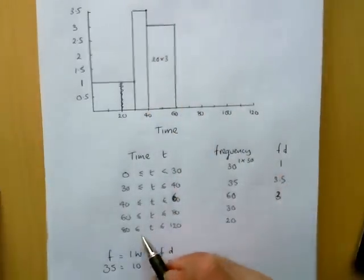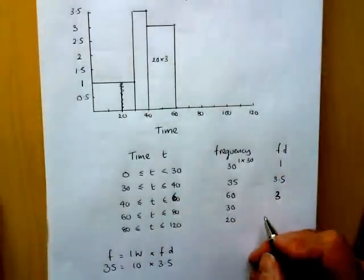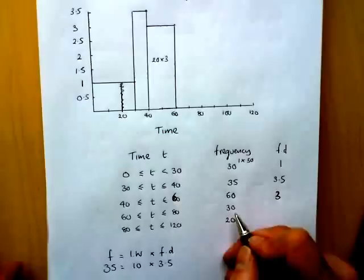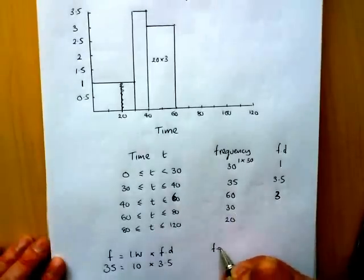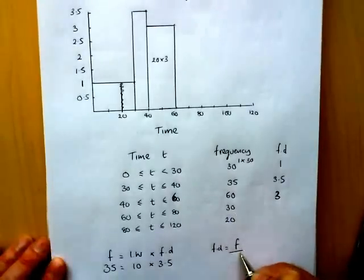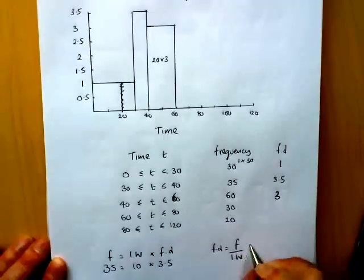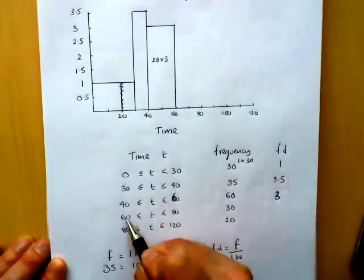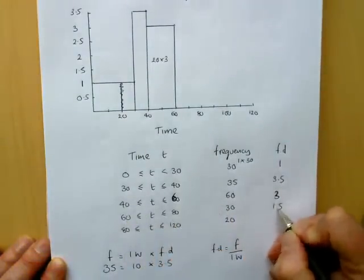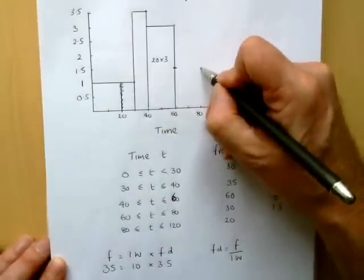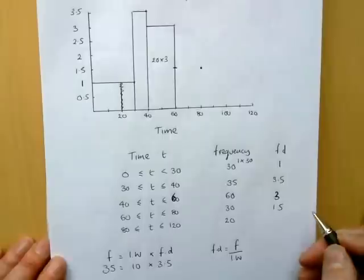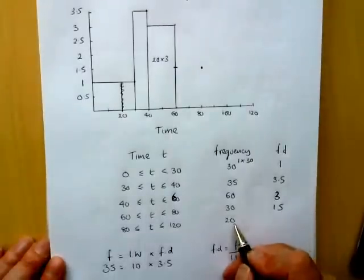So it's the 60 to 80 I need, and then the 80 to 120. The 60 to 80 frequency is 30. The frequency density equals frequency divided by interval width. So 30 divided by 20 is 1.5.